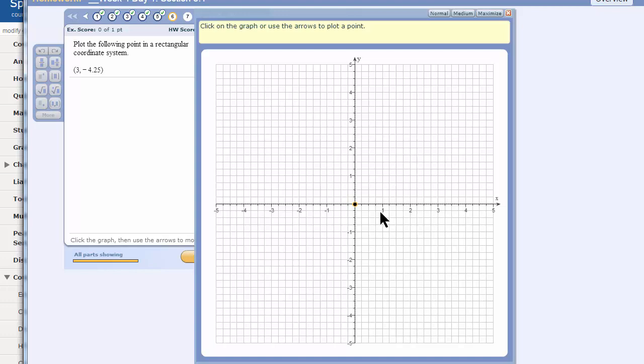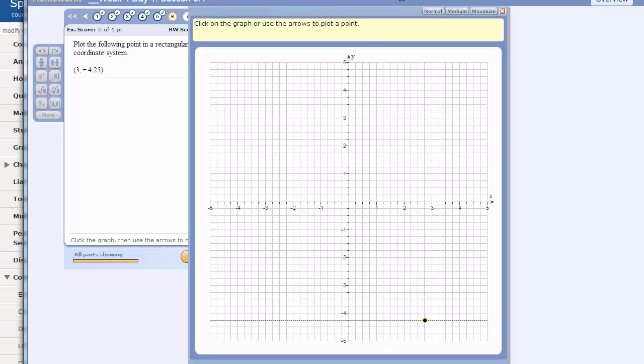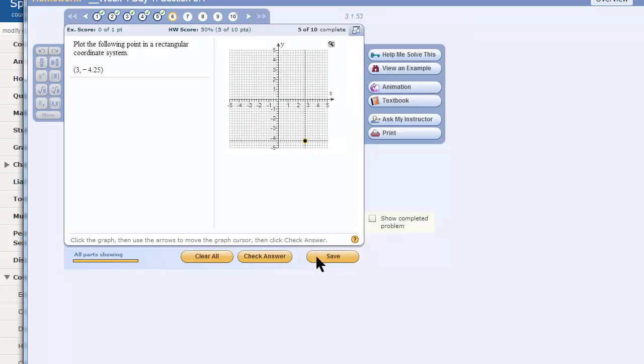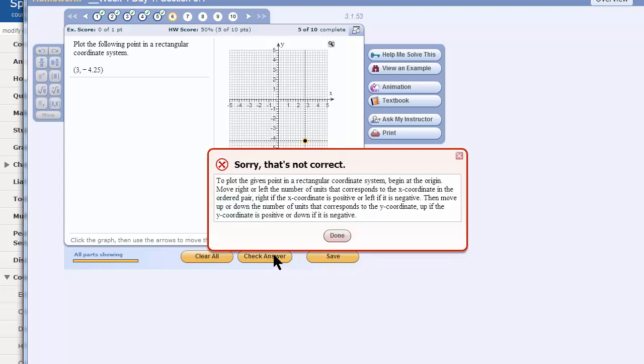So, I will go out to 3 on the x-axis, and then down to 4. Now, that's negative 4. I need to go 1 fourth more to negative 4.25 right there. Save. And check answer. Oh, no!